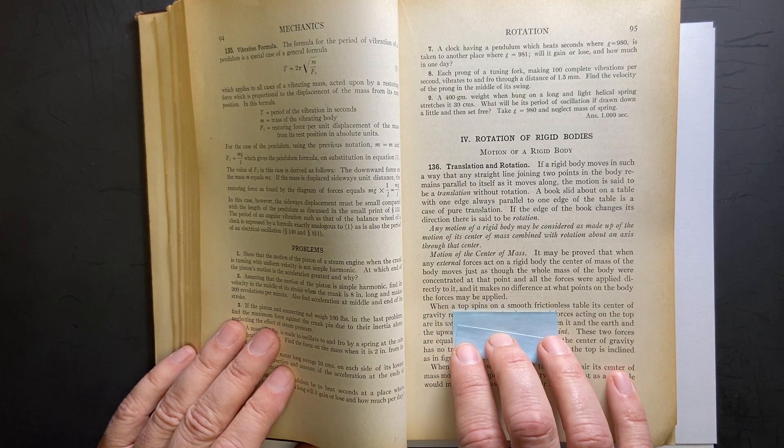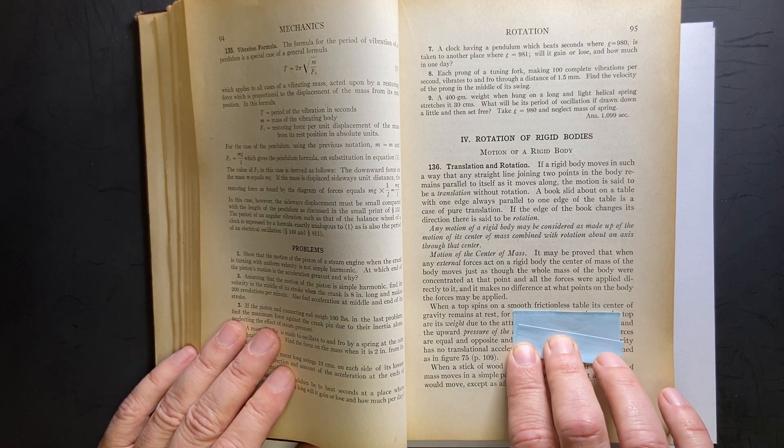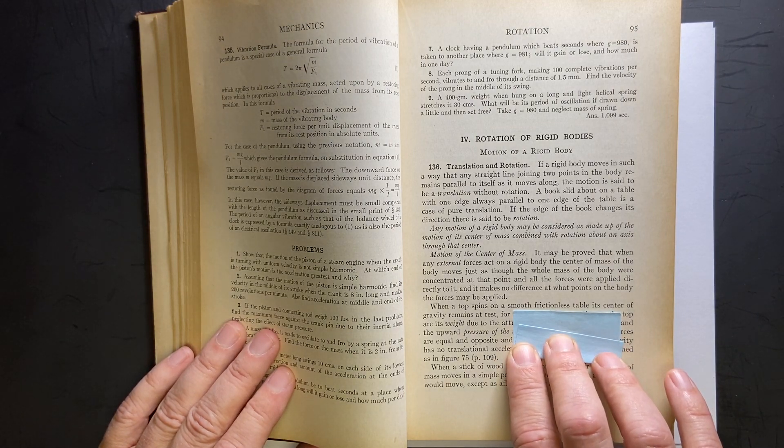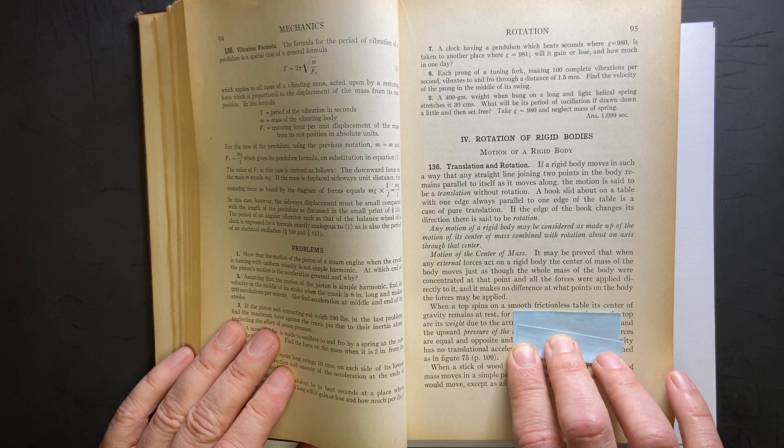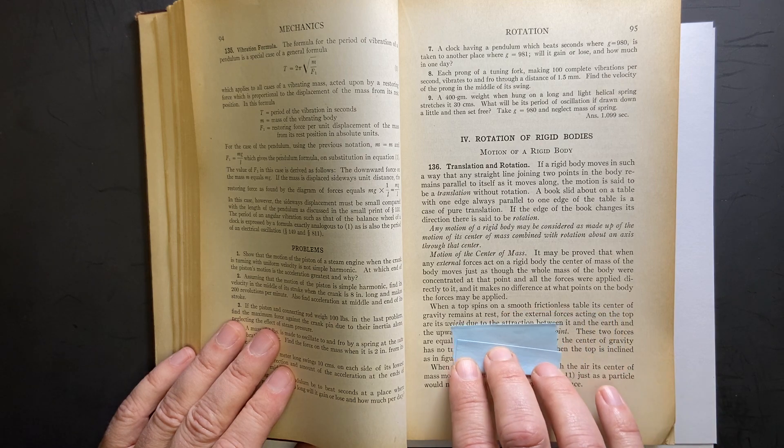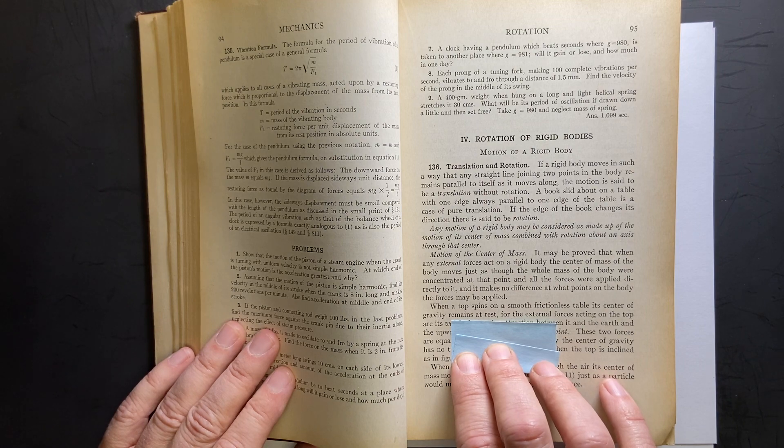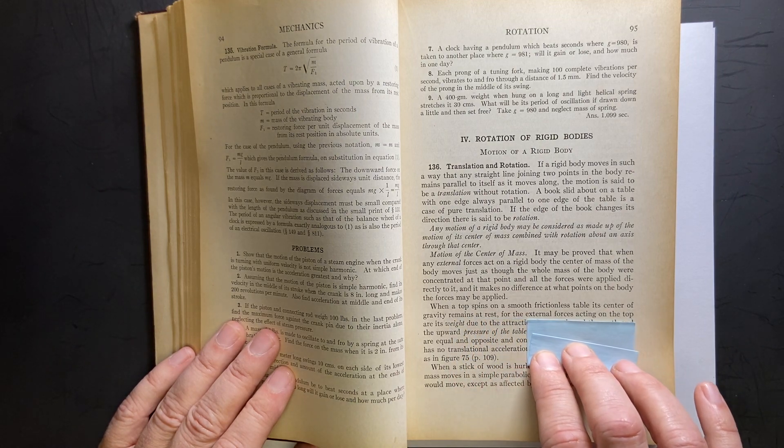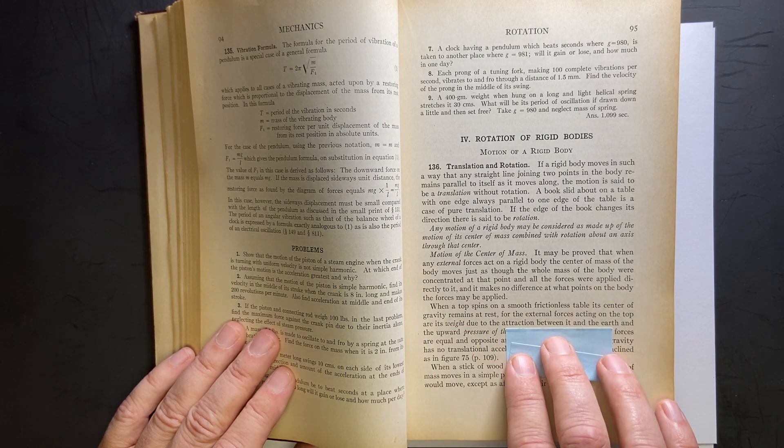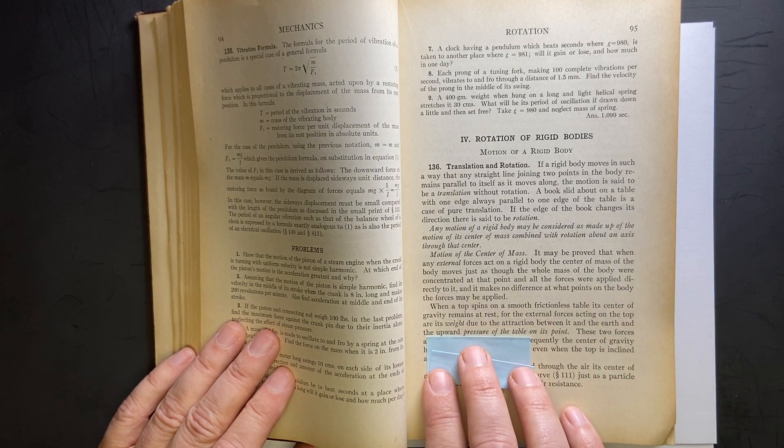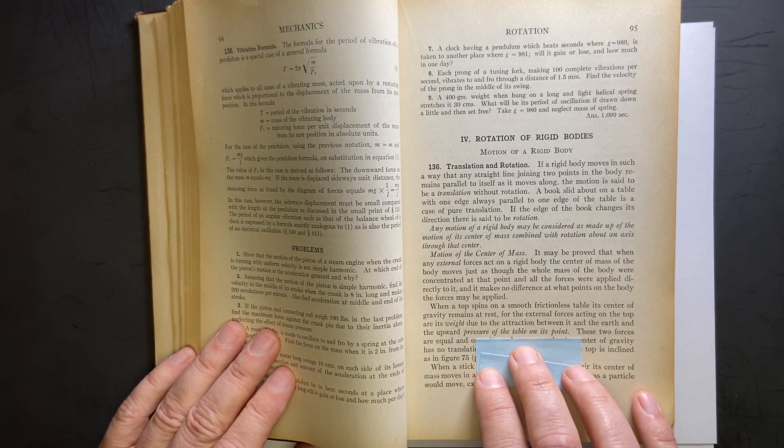When a top spins on a smooth frictionless table, that one really got me because I'm thinking about a wobbling top right away. I mean, I guess if the top's completely stable, this would be okay. Its center of gravity remains at rest if it's not wobbling, which I think most tops wobble, but... For external forces acting on the top are its weight due to the traction between it and the earth. That's really good. And the upward pressure of the table at its point.